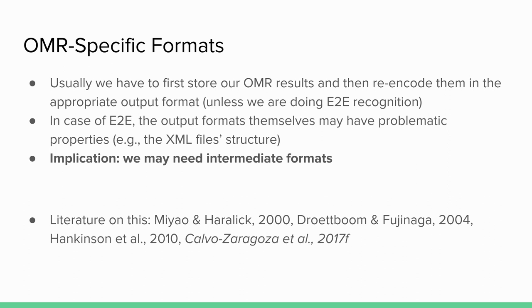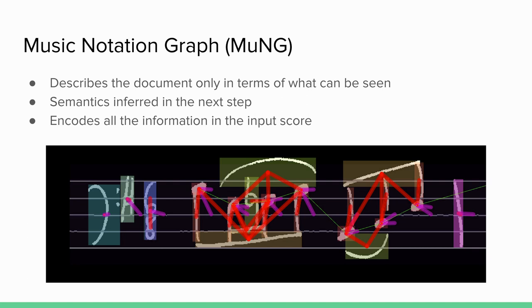So those are the general formats you should be aware of and how they relate to OMR. Then there are formats designed to circumvent some of these limitations, which of course means you need to go from an intermediate format to one of these endpoints for your work to be useful — but that's mostly engineering. It decouples the engineering portion from the OMR research. There is literature on designing these formats and some are already implemented — for example the Music Notation Graph, which describes the document in terms of what you can actually see, and whose graph structure allows you to interpret symbol configurations and infer musical semantics.